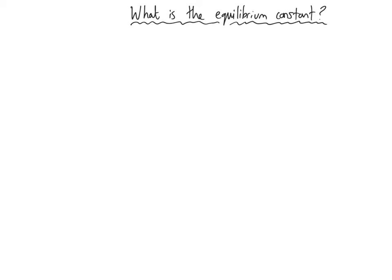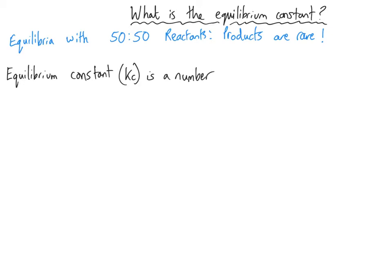In our first video about equilibria, we explored what a dynamic equilibrium was and looked at Le Chatelier's principle about how equilibria can be affected by conditions. We also stated that just because something is in equilibrium, it doesn't mean it is 50% reactant and 50% product. The proportions of reactants and products can vary dramatically from one equilibrium to the next, and even from one temperature to the next.